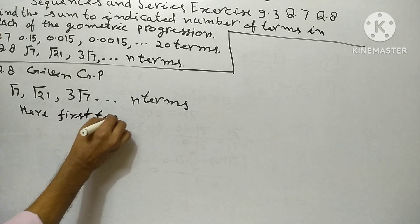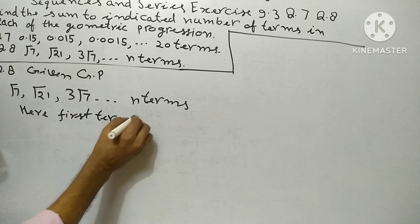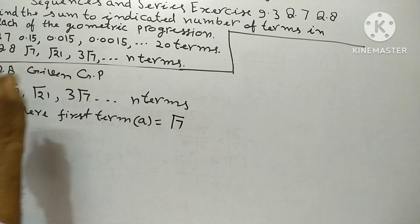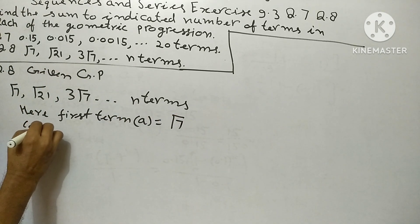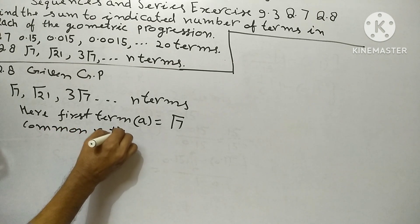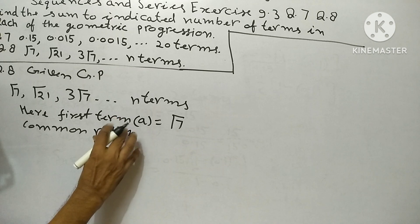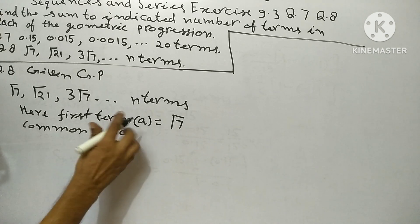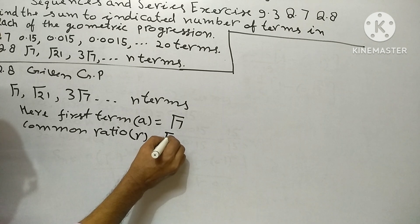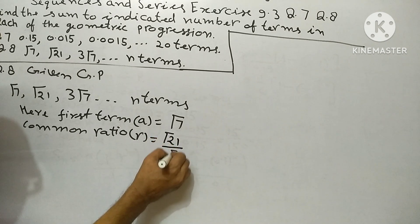Here, first term A equals root 7. Common ratio R equals root 21 upon root 7, equals root 3.